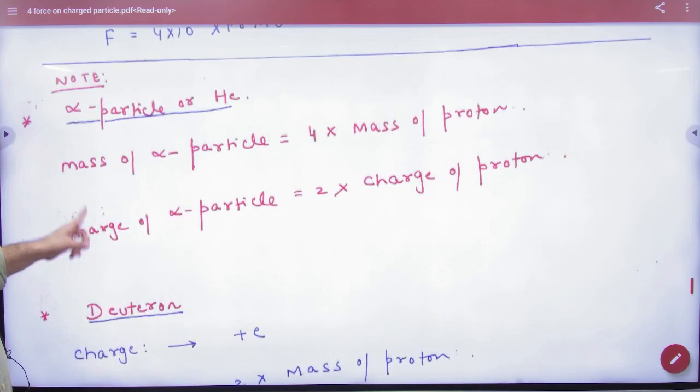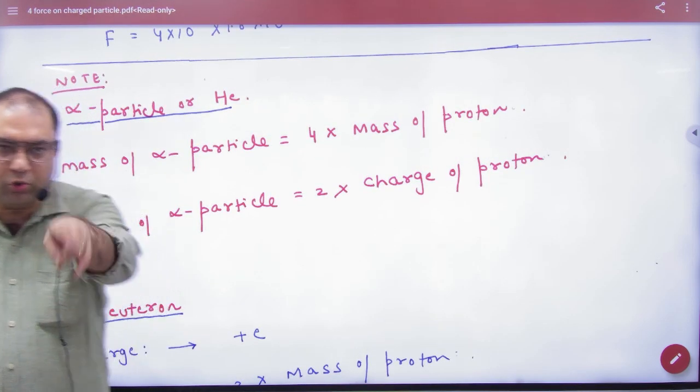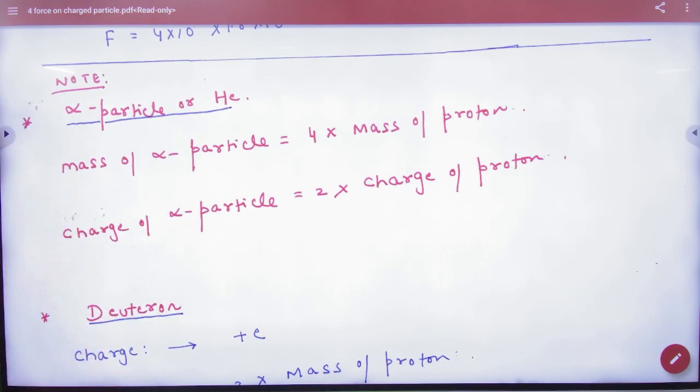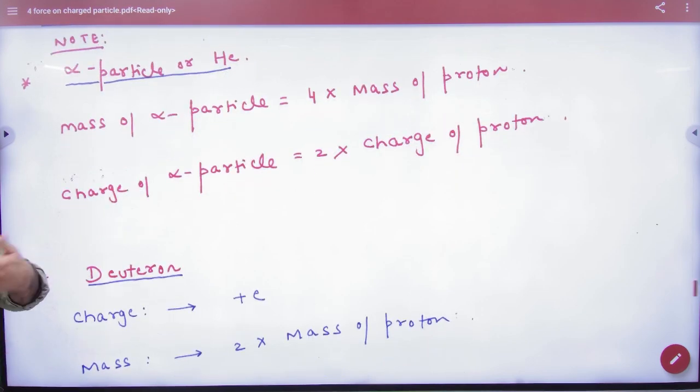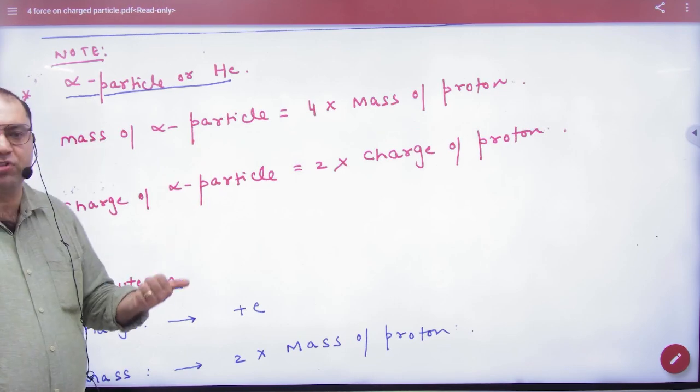They will not give you the mass of alpha particle and will ask a question about the alpha particle. So note that mass of alpha particle is four times mass of proton, and the charge of alpha particle is two times charge of proton.